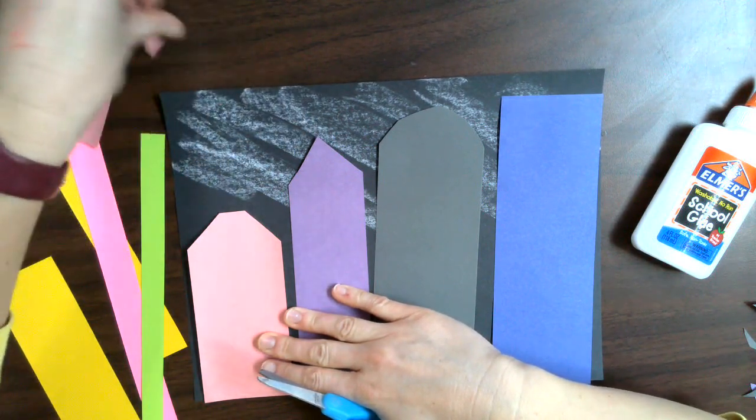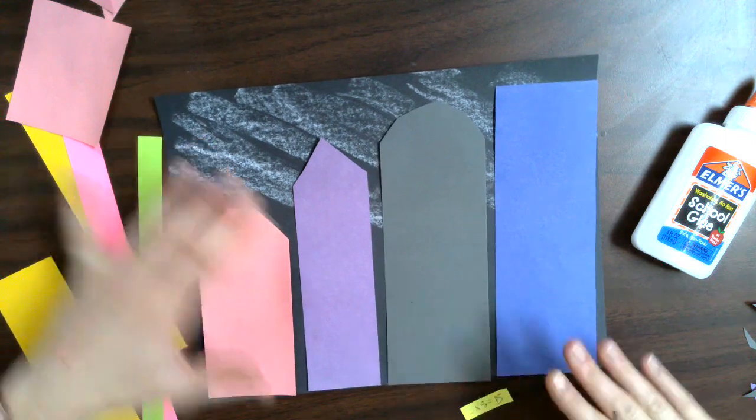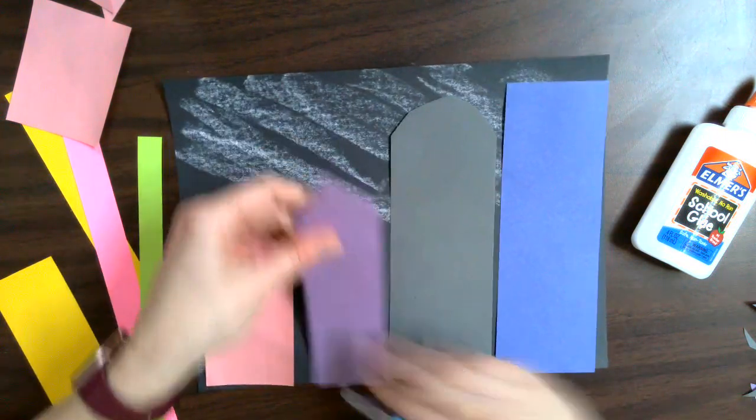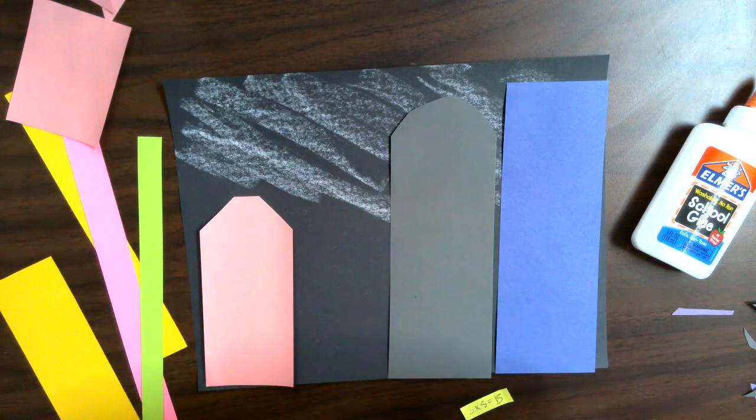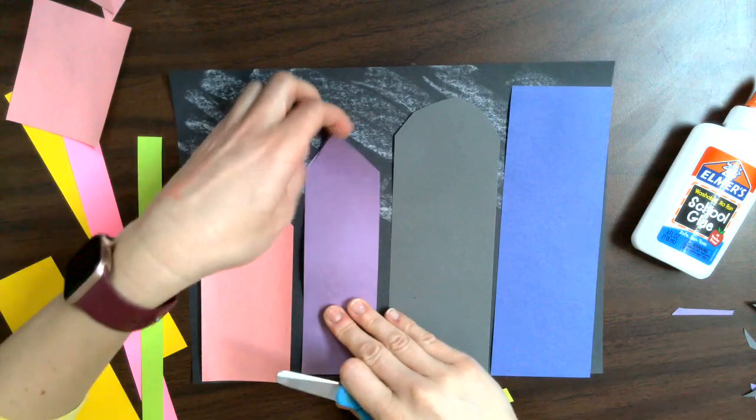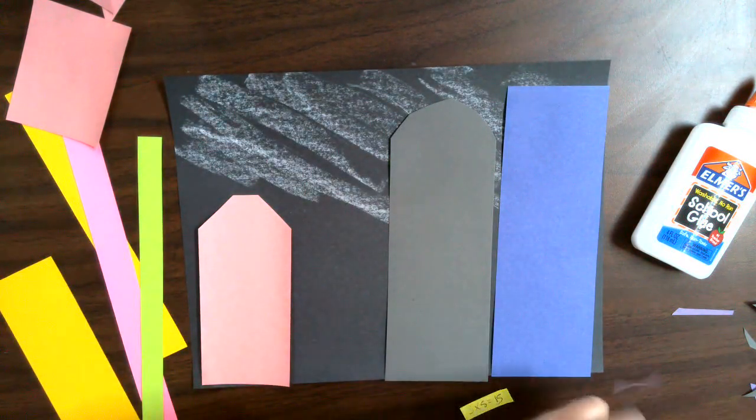So an architect is someone who designs buildings. That involves art and math because the art makes it look good. The form makes it stand and be stable and strong and function. Call that function.